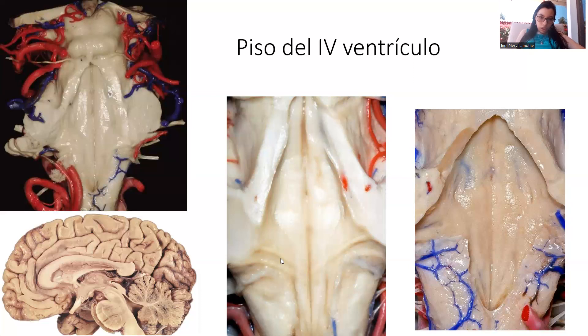In the rostral part of the floor of the fourth ventricle is a region with a bluish discoloration called the locus ceruleus, where neurons that release norepinephrine are located. This stripe-like structure is called the medullary stria of the fourth ventricle.